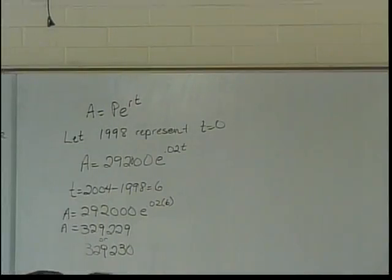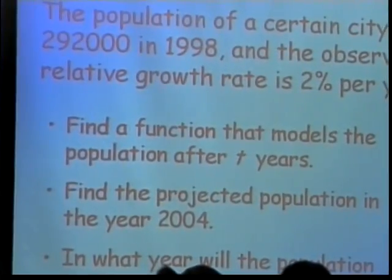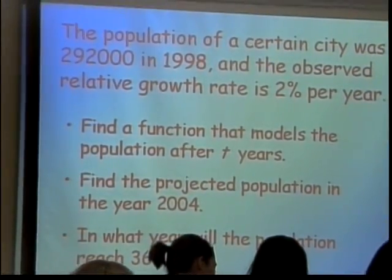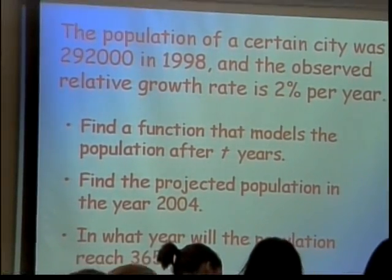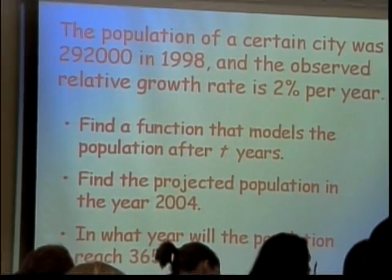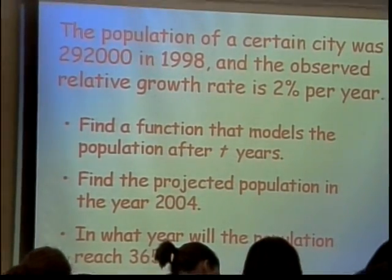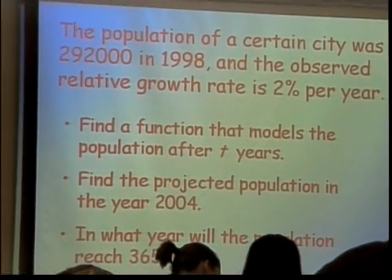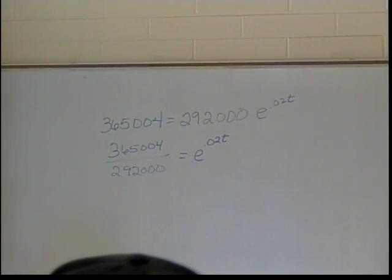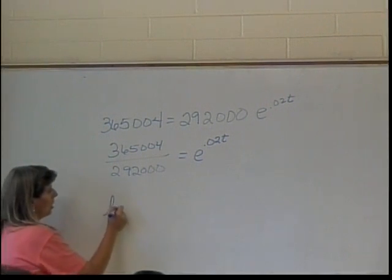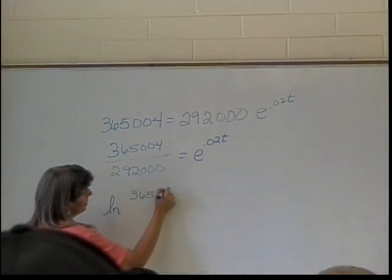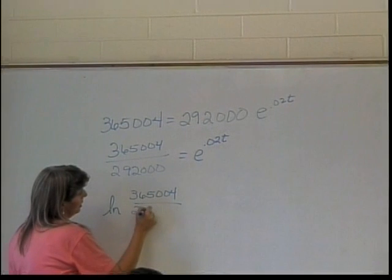In what year will the population reach 365,004? I'm going to let you figure this one out, because it's very much like what we did before, only easier because we have a natural exponential function. When we change to logarithmic form, it'll just be the natural log — no change of base needed. So that's 365,004, then you switch it to natural log form: ln(365,004 / 292,000).